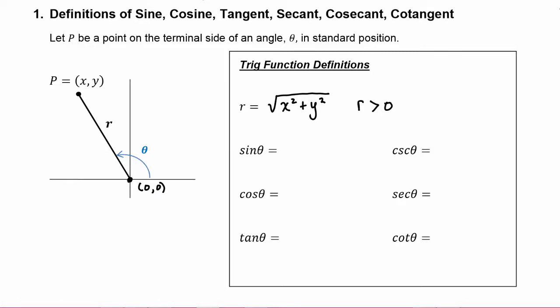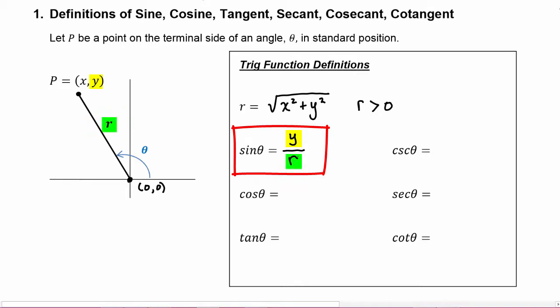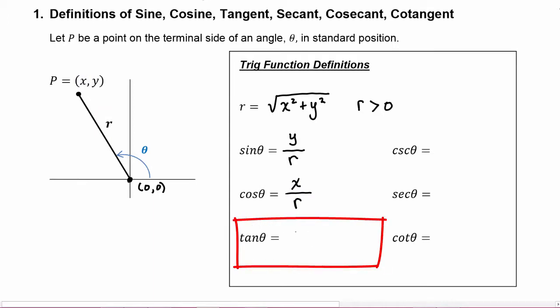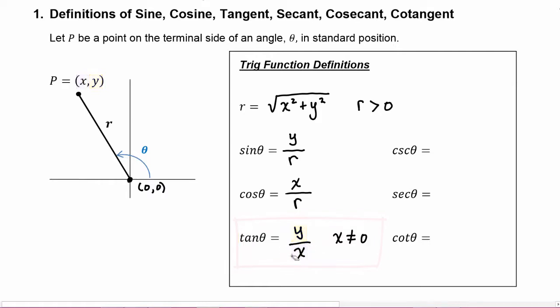Now let's get into the definitions of the trig functions. Sine of theta is defined to be the y-coordinate divided by r. All the trig functions are just ratios involving x, y, and r. Cosine theta is the ratio of the x-coordinate divided by r. Tangent of theta is the y-coordinate divided by the x-coordinate, and of course x cannot be zero because it's in a denominator. We didn't need to say that for sine or cosine because r can never be zero since r is positive.